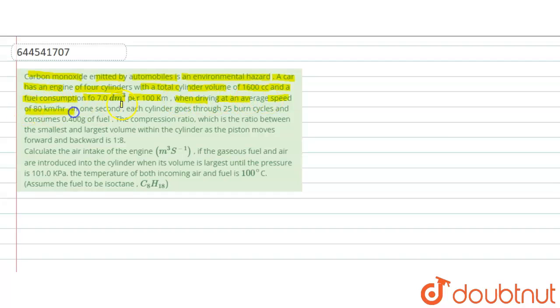In one second, each cylinder goes through 25 burn cycles and consumes 0.400 gram of fuel. The compression ratio, which is the ratio between the smallest and the largest volume within the cylinder as the piston moves forward and backward, is 1 is to 8.